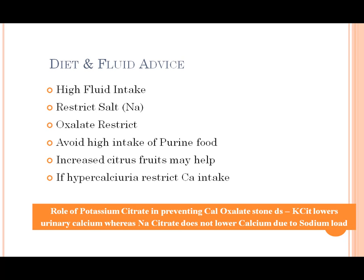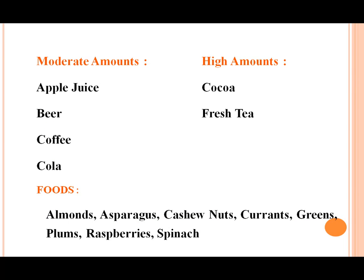Dietary advice: high fluid intake, restrict salt, restrict oxalate, and restrict calcium. Avoid high calcium-containing food, increase citrus fruits. For hypercalciuria, moderate intake of calcium products. Moderate amounts of apple juice, beer, coffee, cola, cocoa, tea, and foods like almonds, aspirin, cashew nuts, coconuts, curds, greens, spinach, and raspberries should be taken with caution.